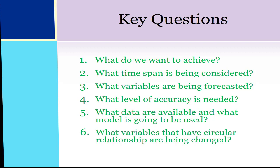The last question is: what variables have a circular relationship? In this specific example, we want to use short-term borrowing, or the bank loan, as the circular variable — meaning if you change the short-term borrowing, it not only impacts items on the balance sheet but also impacts items on the income statement and cash flow statement. Now let's talk about the key assumptions we want to make for this example.